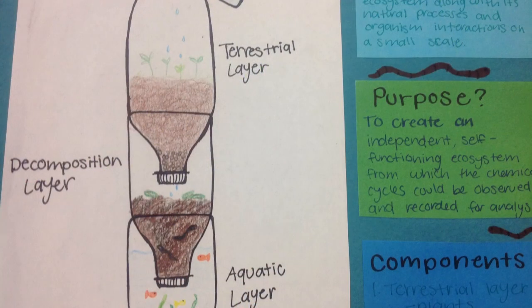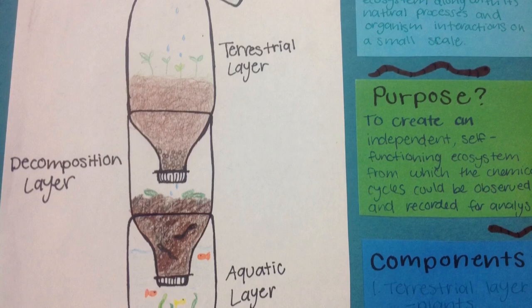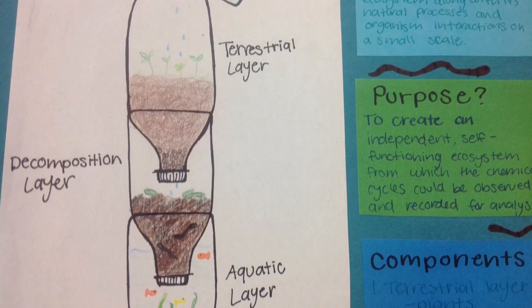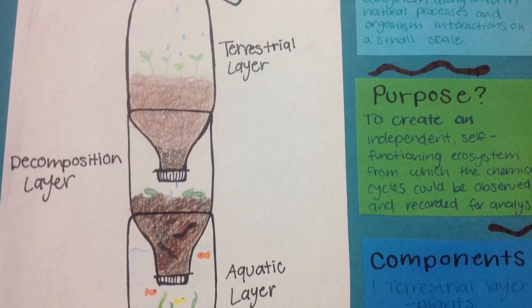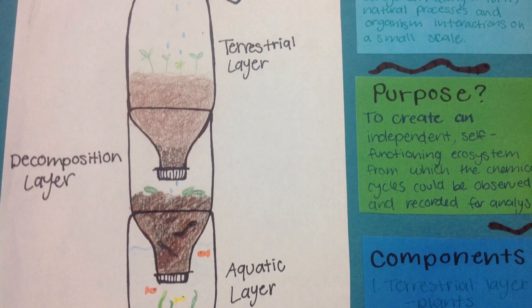An eco column is pretty much an ecosystem in a bottle. It comes in a terrestrial layer, a decomposition layer, and an aquatic layer.